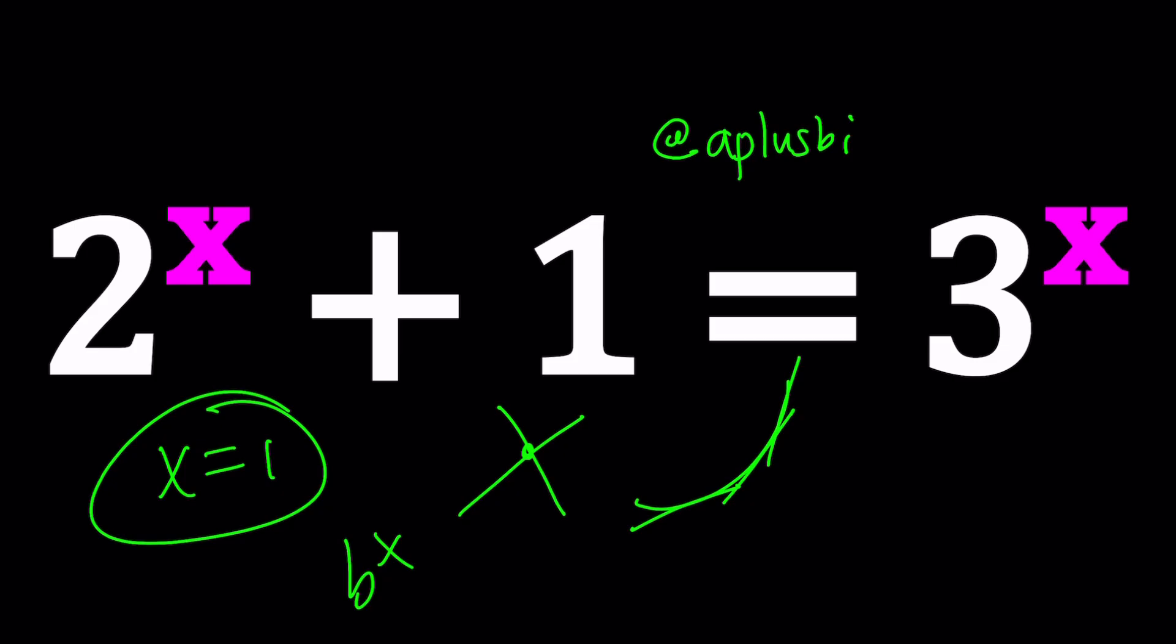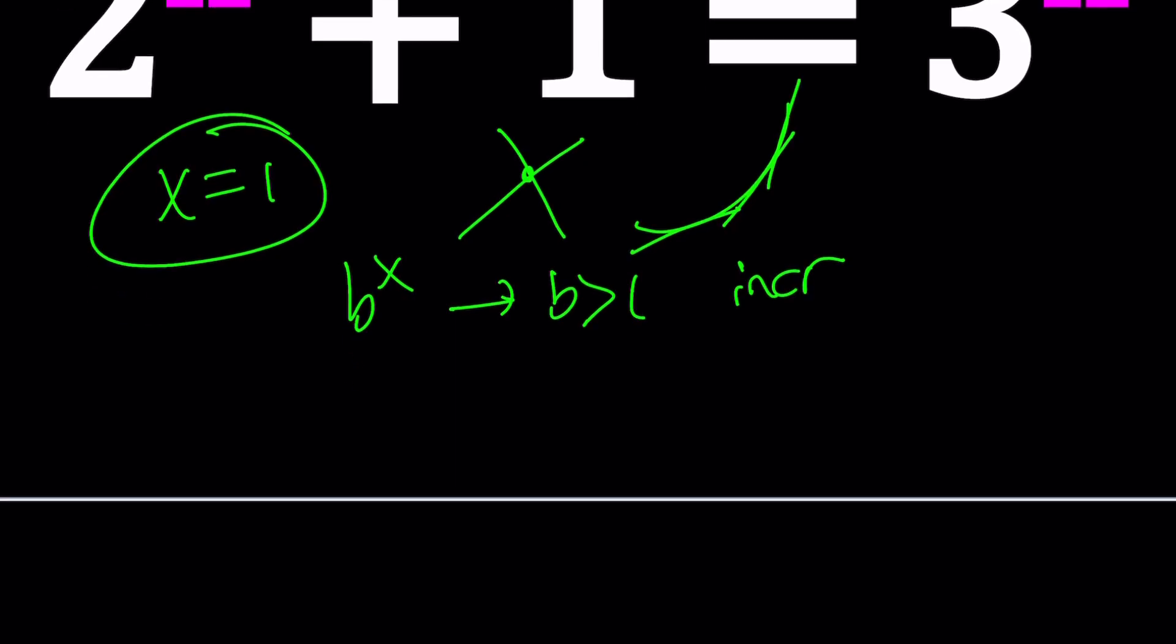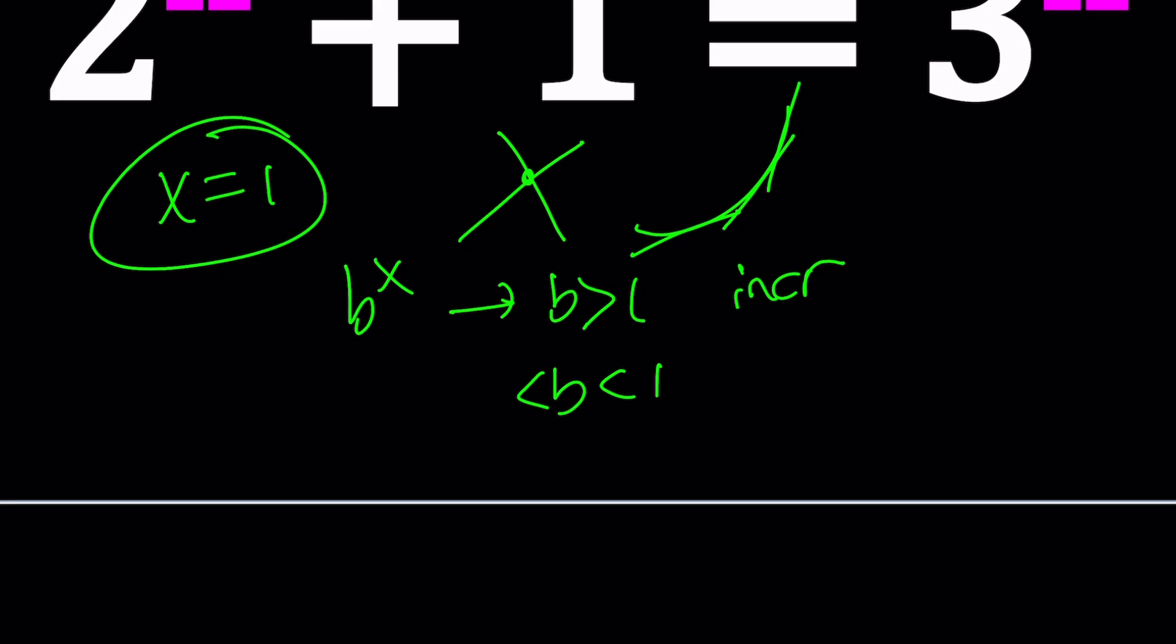But if b is greater than 1, then you have an increasing function. If b is less than 1, of course, it has to be greater than 0. Otherwise, you're going to have to deal with lots of complexities and the complex world. It's decreasing. So, increasing, decreasing.